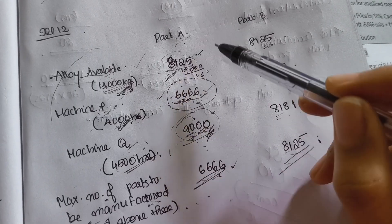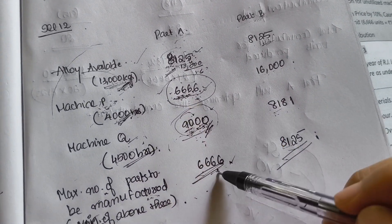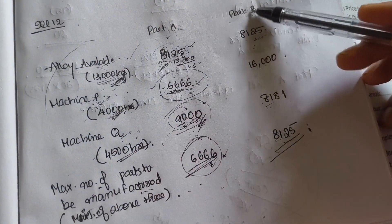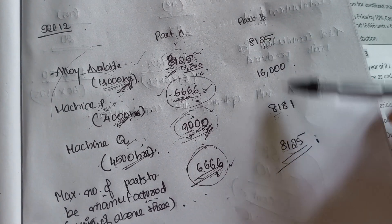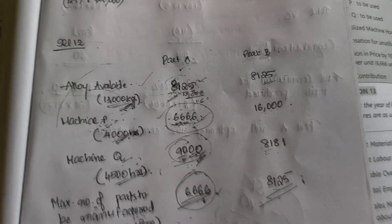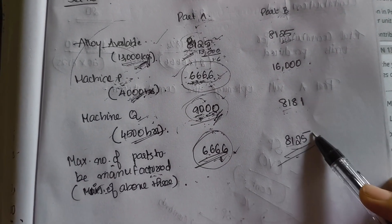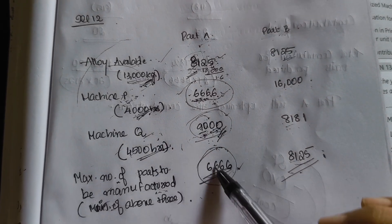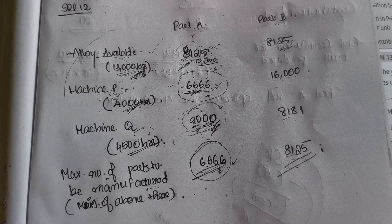There will be enough alloy and enough machine Q hours to produce the required 6,666 units of part A. For part B, the minimum of the three constraints is 8,125 units. So 8,125 units of part B can be produced. We have now found the maximum number of units producible for both parts; let's find the contribution.